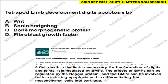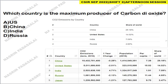Next: tetrapod limb development — which factor is involved in digit apoptosis? Referring to the sixth edition of Developmental Biology, cell death in the limb is necessary for formation of digits and joints. This apoptosis is mediated by BMP (bone morphogenetic protein). The effect of BMP can be regulated by Noggin protein, and BMPs are involved both in inducing apoptosis and in differentiating mesenchymal cells into cartilage.